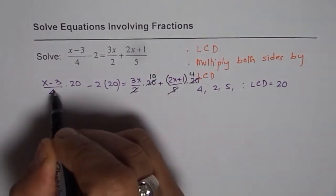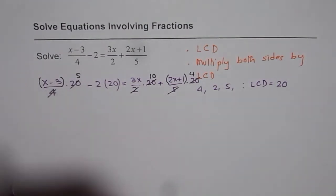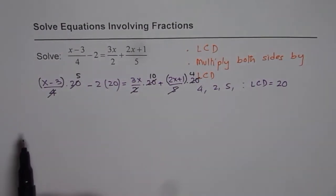Now here we had 1 in the denominator. This 20 can be divided by 5, it goes 4 times. And you need to multiply both the terms by 4.